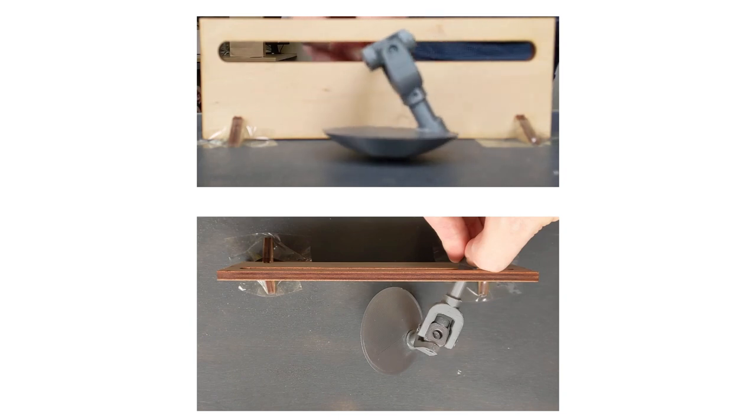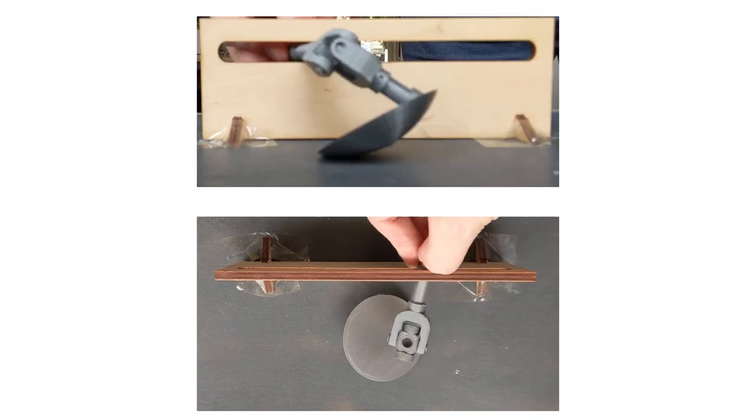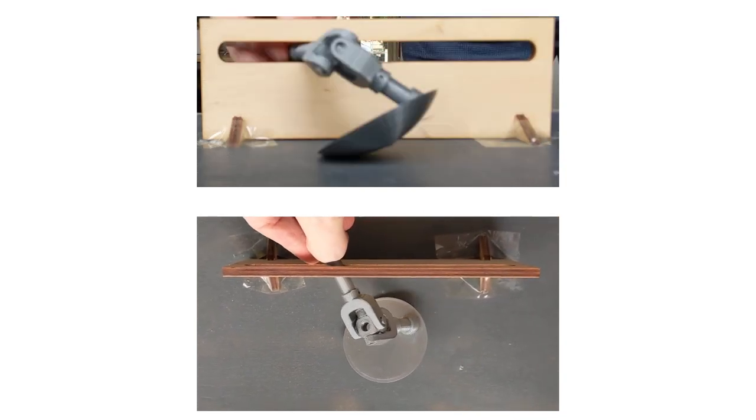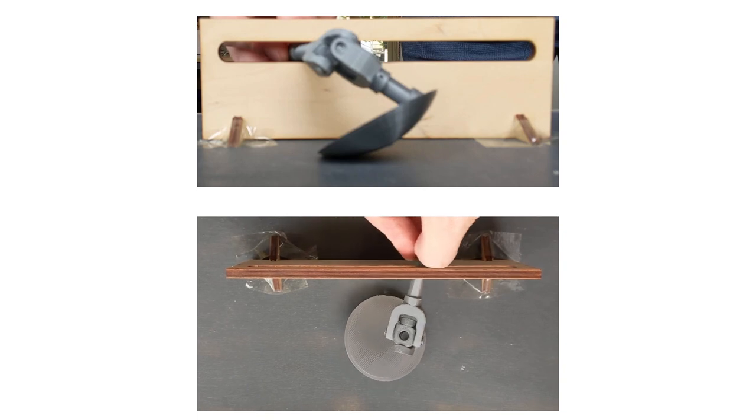From the side, the hip, where my fingers are, follows a straight line. Whereas from the top, you can see that the knee first goes out to the side and then back in.